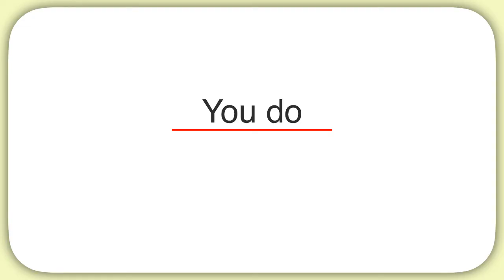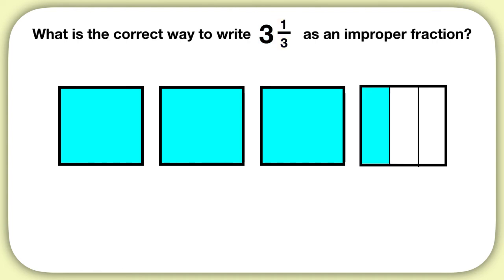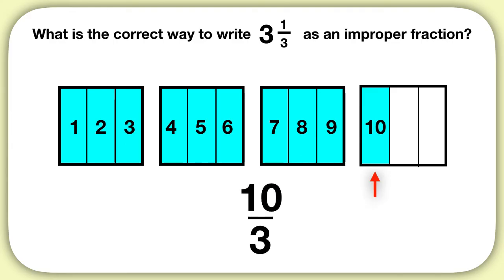Now it's time for you to practice on your own. What is the correct way to write 3 and 1 third as an improper fraction? You should start by drawing out your fraction — 3 wholes and then 1 third more. To write it as an improper fraction, split each whole into thirds. Then count up that you have 10 thirds in total. So your numerator is 10, and because we have thirds, it's 10 over 3. 3 and 1 third can be written as the improper fraction 10 thirds.